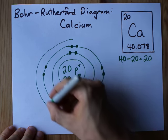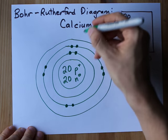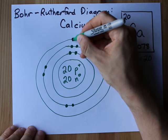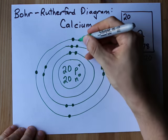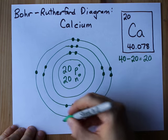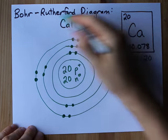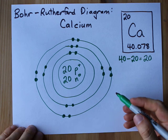And the third shell generally stops out at 8. So let's just draw those in, 1, 2, 3, 4, 5, 6, 7, 8. That's 18 electrons total that we've written down.